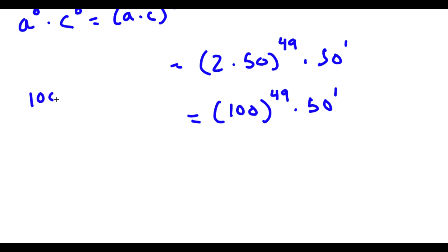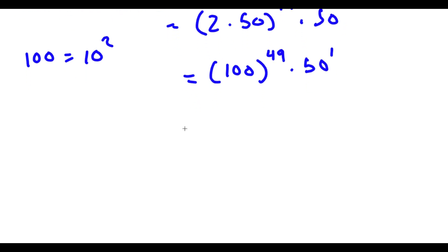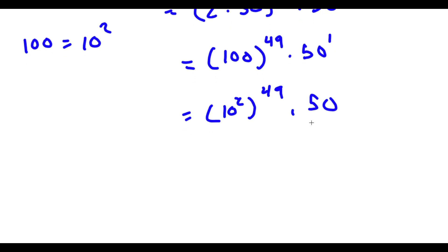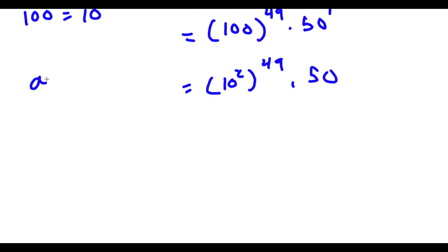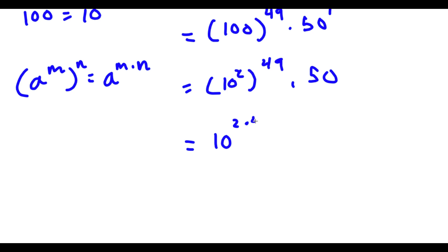Now, 100 is the same thing as 10 squared. So now I can replace 100 with 10 squared, and I get 10 squared to the power of 49 times 50. Now, if I have something in the form a to the power of m to the power of n, this is the same thing as a to the power of m times n. So 10 to the power of 2 to the power of 49 equals 10 to the power of 2 times 49. Now I have this times 50. 2 times 49 equals 98, so now I have 10 to the power of 98 times 50.